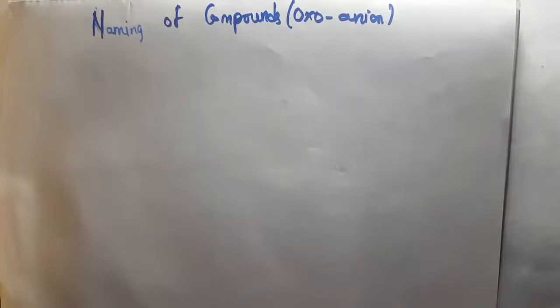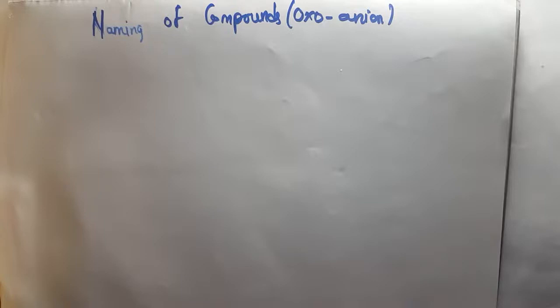Welcome back to Study By Yourself. In this video I'm going to talk about how to name oxoanions. So what are oxoanions? Oxoanions are compounds with oxygen in them as well as a charge, and with all what I've seen, they are all negative charges. So I'm going to write some of them, go through them, and then see how we can name them.